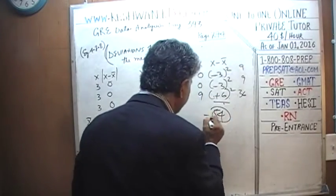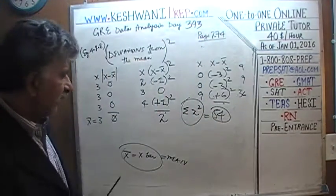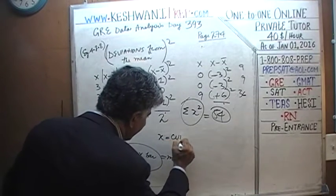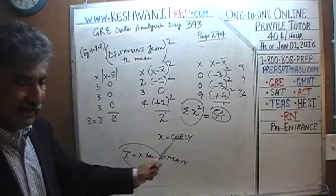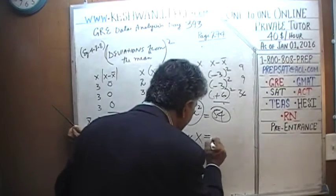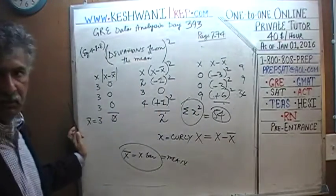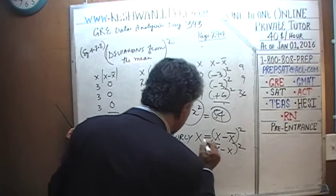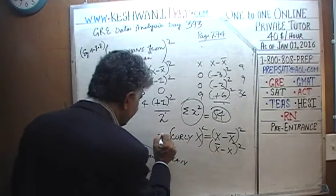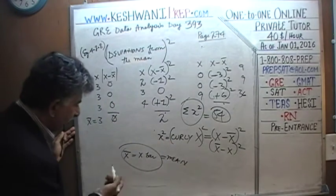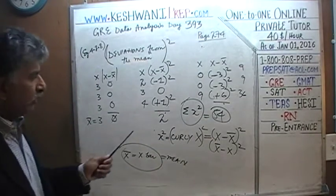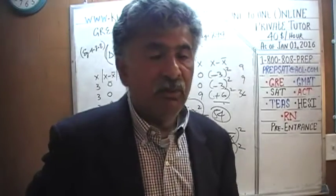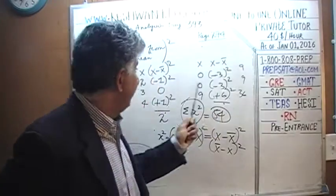This represents the sum of the squares of the deviations from the mean. By the way, the symbol for deviation from the mean is called 'curly x' in some textbooks — defined as how far an observation is from the mean. It doesn't matter whether you compute x minus x-bar or x-bar minus x, since you'll be squaring the quantity anyway. The sum of curly x squared is 54 versus 2, clearly showing that Town C has far greater spread than Town B.